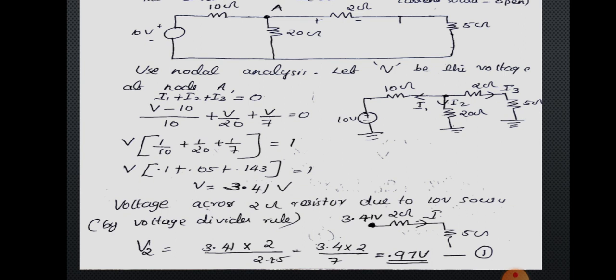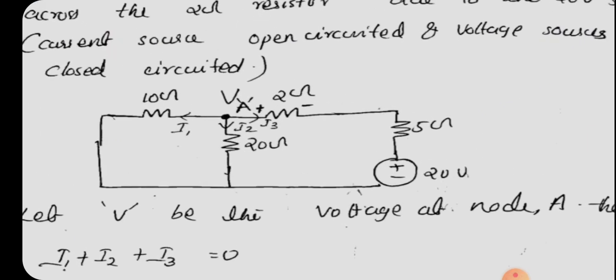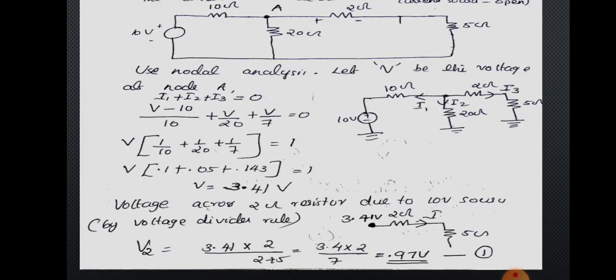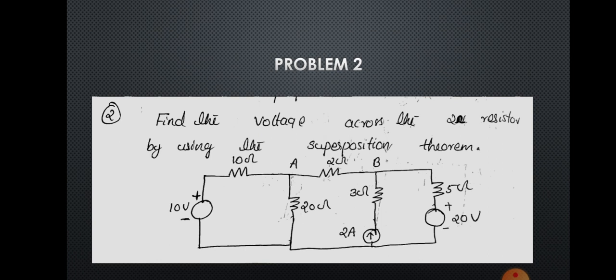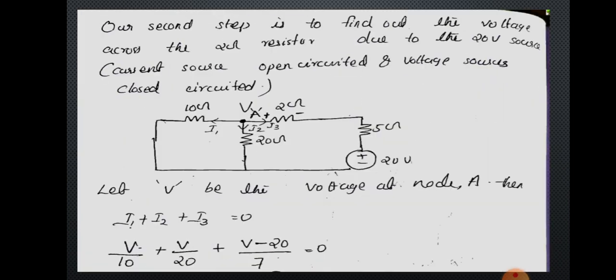Next, consider the effect of the 20 volt battery alone. The 2 ampere current source is open-circuited, removing that branch, and the 10 volt battery is replaced by a short circuit, so 10 ohm remains. The circuit diagram without the 10 volt battery and 2 ampere current source is drawn, retaining 20 volt battery, 10 ohm, 20 ohm, 2 ohm, and 5 ohm resistances.